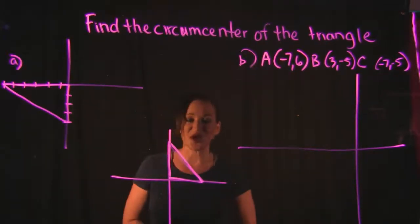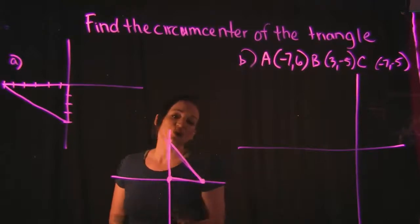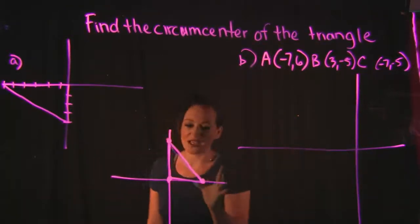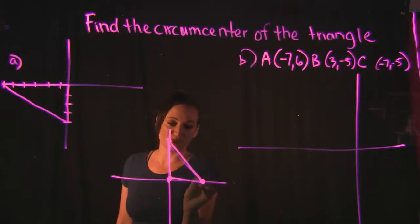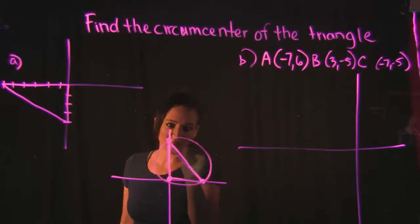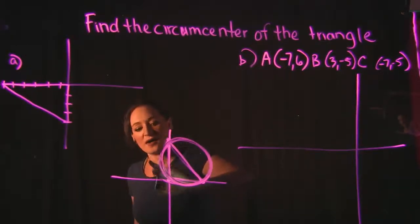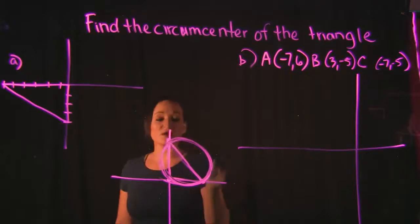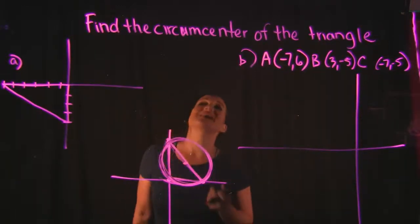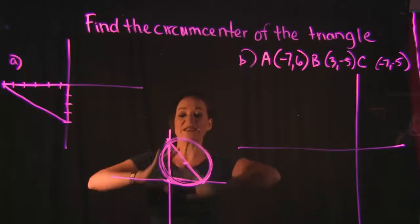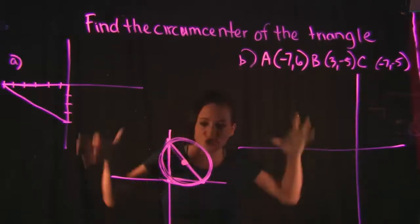A triangle has three sides and three points — point one, point two, point three. If you were to draw a circle connecting all three of those vertices of the triangle, the circumcenter is directly the middle of that circle. So that's what we're doing when we're finding the circumcenter of a triangle — based off the triangle, we're trying to find that center point of the circle.